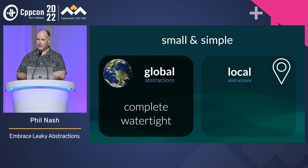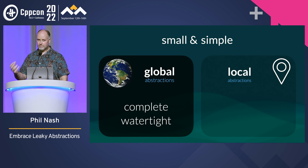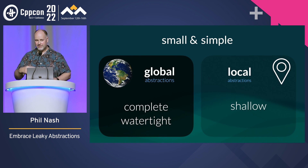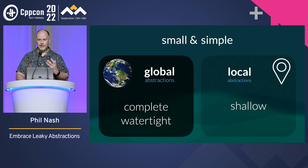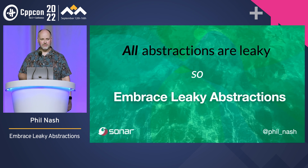On the other side, we've got what I call local abstractions — the things you have in your own codebase. You own both sides of them, you see both sides, you have to deal with both sides. You're going to use abstractions, but you don't want them to get in the way. So keep them shallow. When was the last time you were debugging some complex problem and had to go through layers of abstractions to get to the actual thing going wrong? It just gets in the way. Use them just as a tool for managing complexity — don't let them become the cause of the complexity itself. Embrace their leakiness. All abstractions are leaky, so embrace leaky abstractions. Thank you.